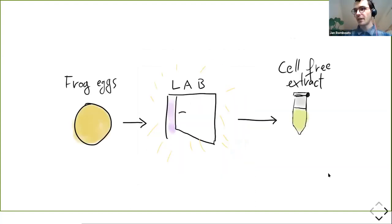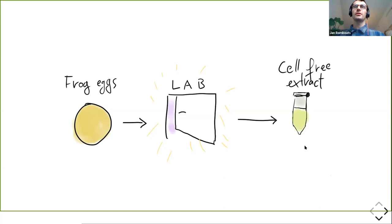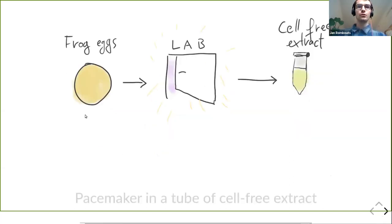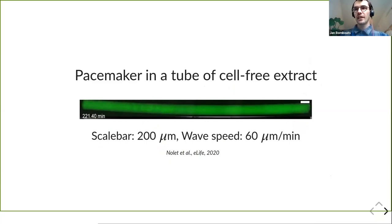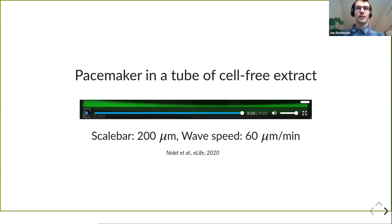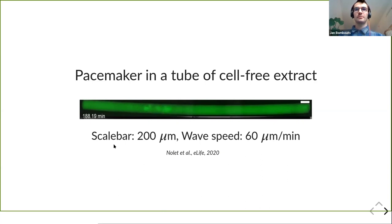My colleagues in the lab can do some magic and turn these frog eggs into what is called a cell-free extract — basically all of the biochemistry without structure, so no membranes and things like that. You can do a lot with this cell-free extract, including putting it in a tube. The result is that the cell-free extract still has oscillations, and they also seem to come from somewhere — you have a region that sends out waves. This is a quasi-1D system where it oscillates and produces waves.